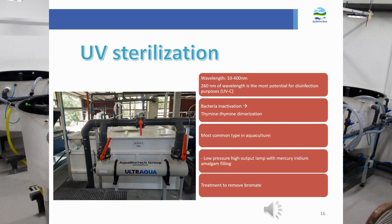Different types of UV lamps are available in the market. The most commonly used in aquaculture is the low-pressure high-output lamp, which uses mercury, iridium, and micron filling. It is one of the most energy-efficient options compared to high-pressure lamps. Inside the lamp there is solid mercury, and when the lamp heats up the mercury evaporates, creating a vapor that emits UV radiation when excited by electricity.